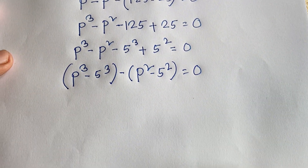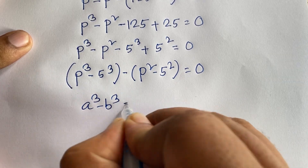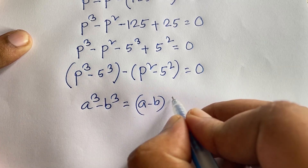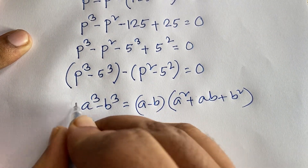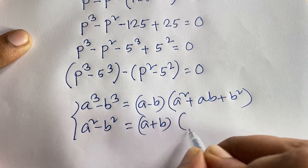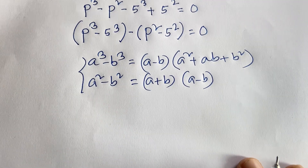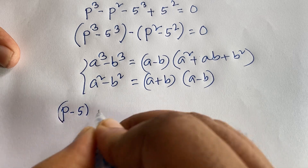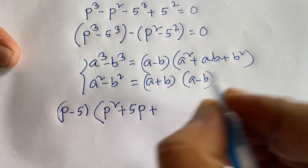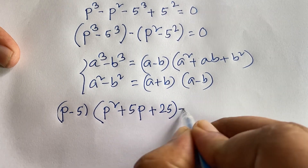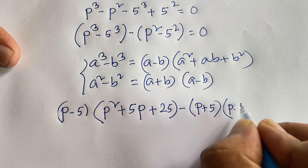Now we apply two identities. Here is A cubed minus B cubed, which equals A minus B times A squared plus AB plus B squared. And here is A squared minus B squared, which equals A plus B times A minus B. So, according to these identities, P cubed minus 5 cubed equals P minus 5 times P squared plus 5P plus 25. And A squared minus B squared gives us P plus 5 times P minus 5 equal to 0.